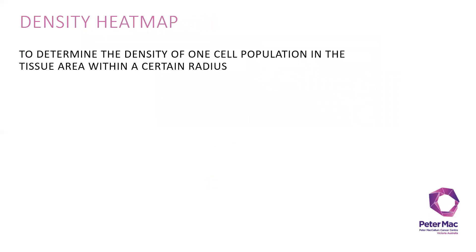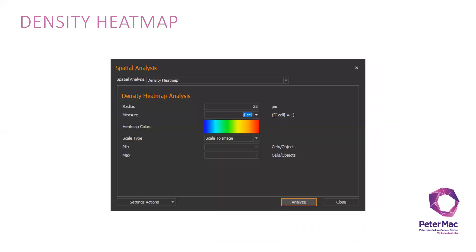The last one is density heat map analysis, which allows you to determine the density of one cell population in the tissue area within a certain radius. Here I set the radius of 25 microns to measure the T cell density.